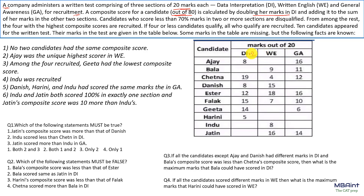Candidates who score less than 70% marks in two or more sections are disqualified. The disqualification criteria: 70% of 20 is 14, so if you get less than 14 in two or more subjects, you will be disqualified.